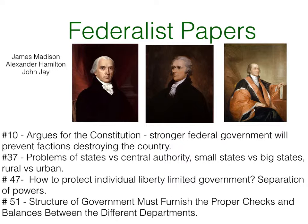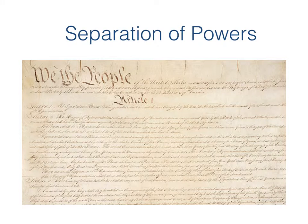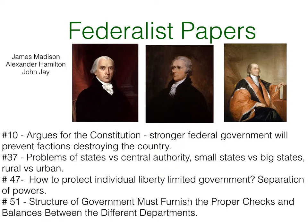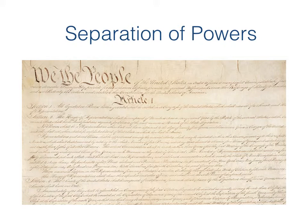Paper number 51 lays out the structure of government — we can have a stronger federal government and protect individual rights as long as we have proper checks and balances and different departments doing different things. That's what gives us the Constitution. We've spent most of this class talking about the Constitution, and the Federalist Papers is where these ideas really started to take shape — these three men laying out the ideas that would eventually become the Constitution.